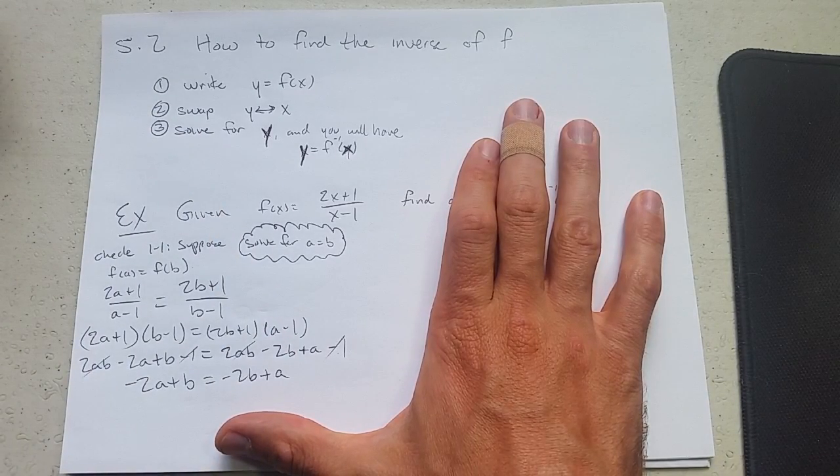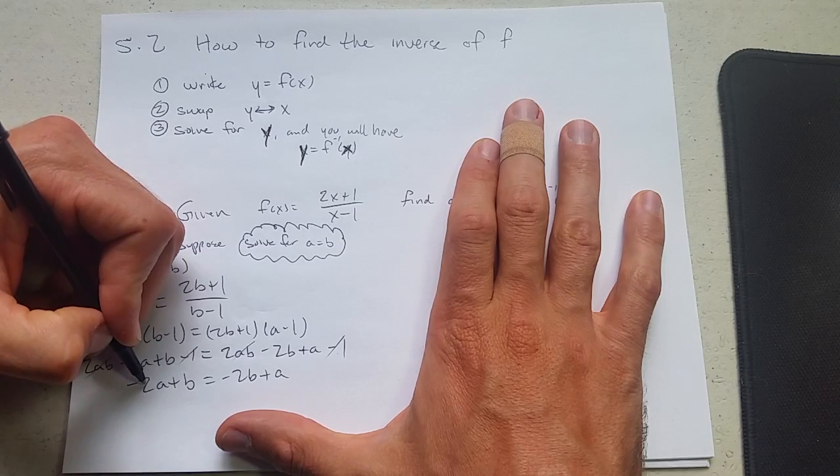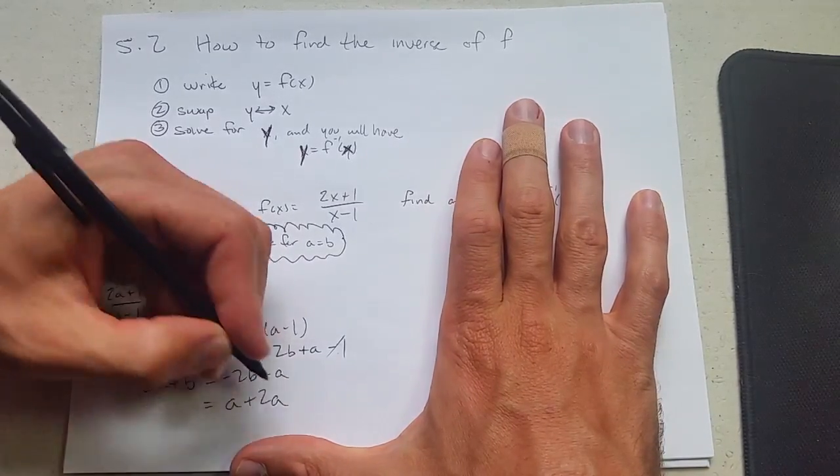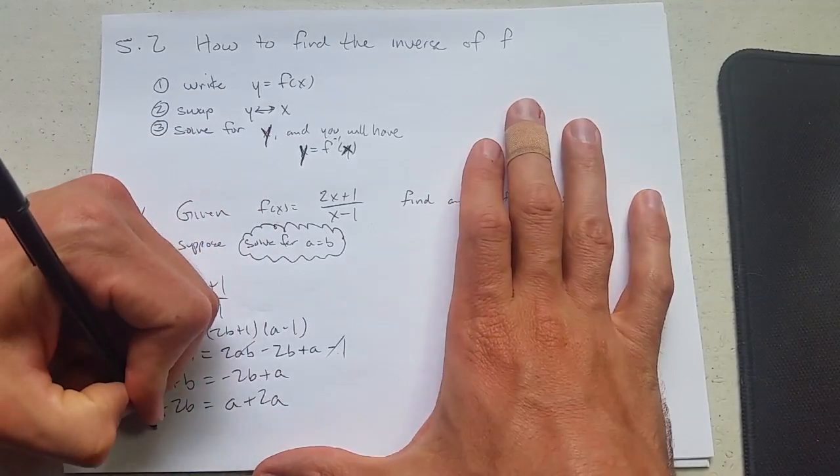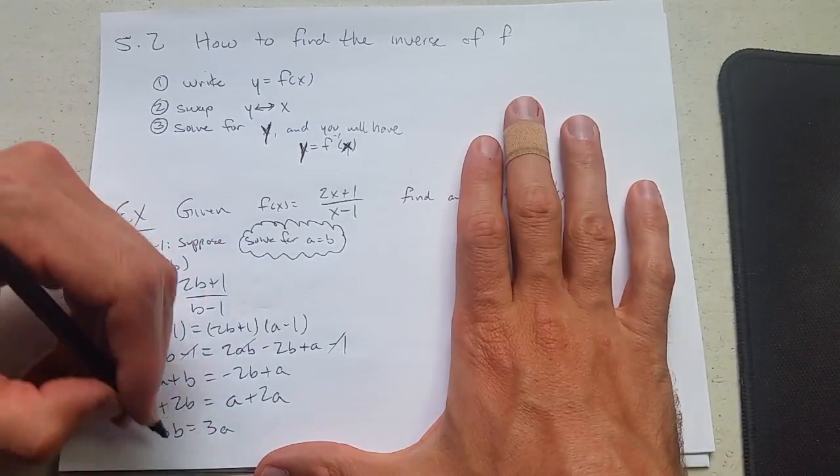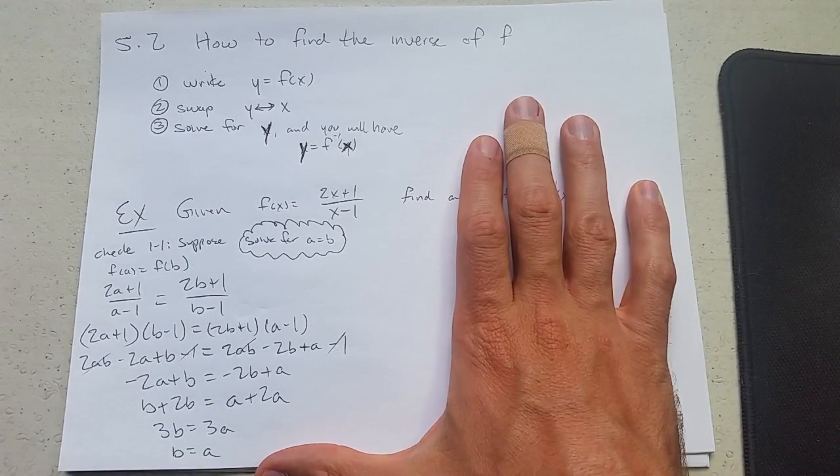So let's get all the a's on one side, all the b's on the other side. I like things to be positive. I'm going to add 2a to the right side. So we have a plus 2a. I'm going to add 2b to the other side. So we have 3b equals 3a. Multiply both sides by a third. b equals a.